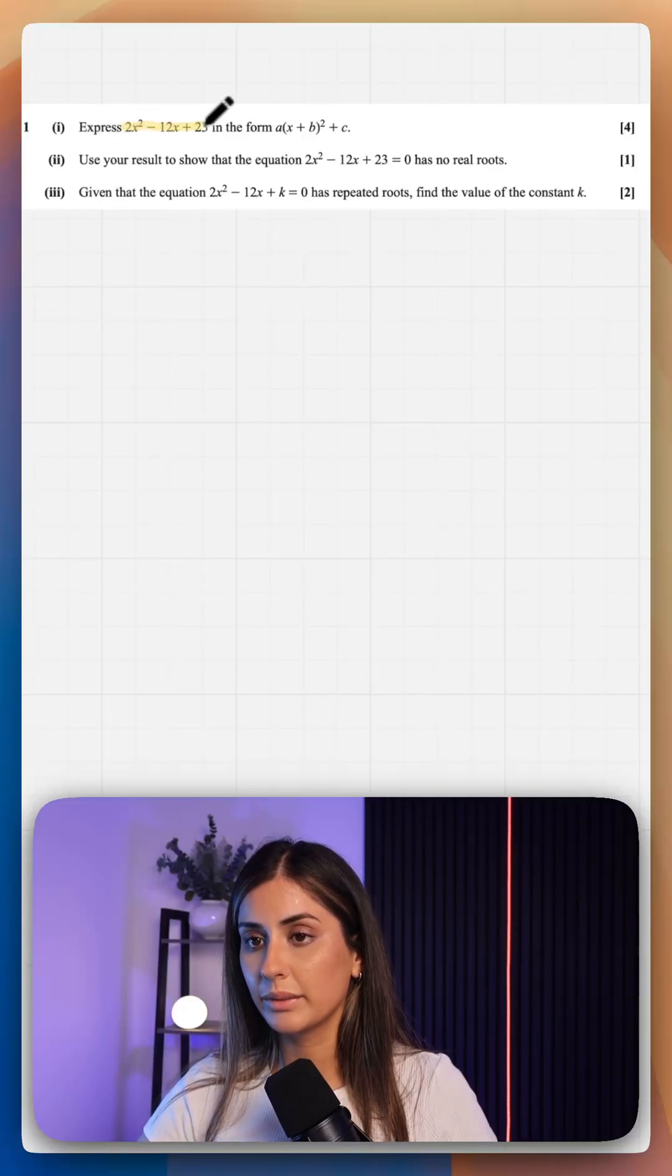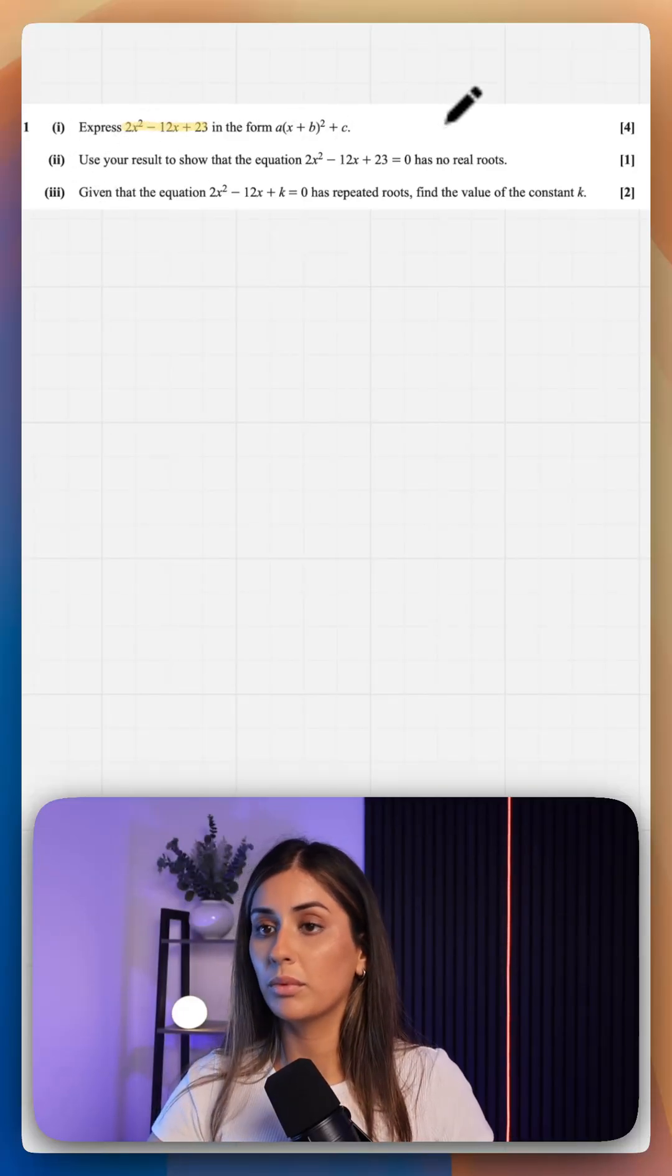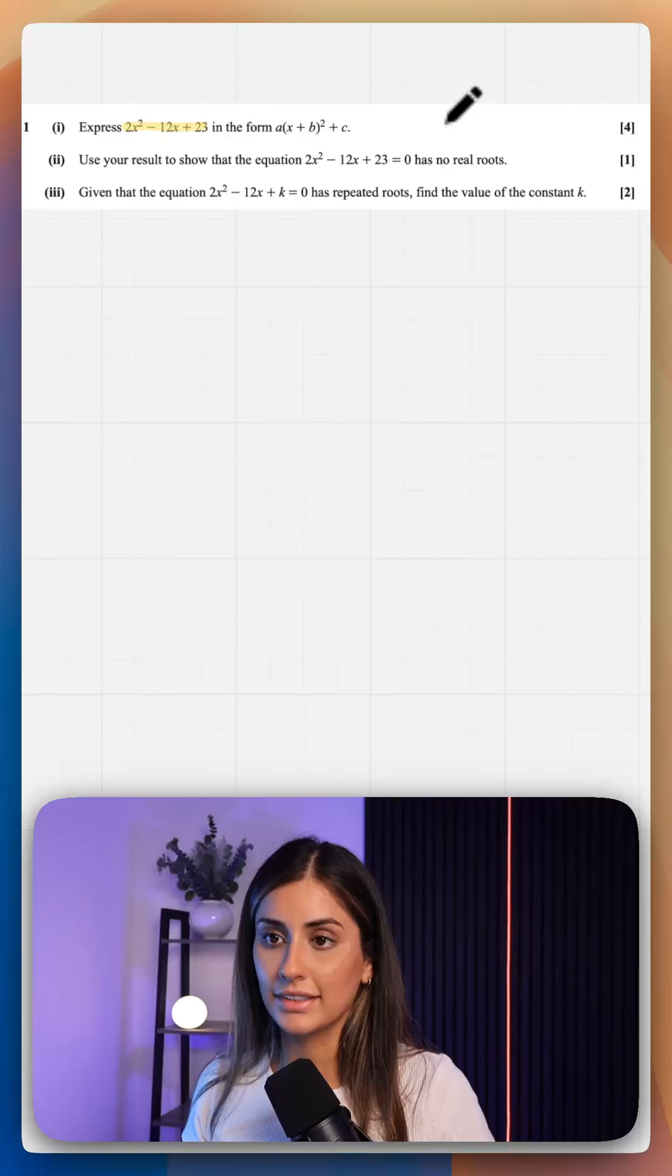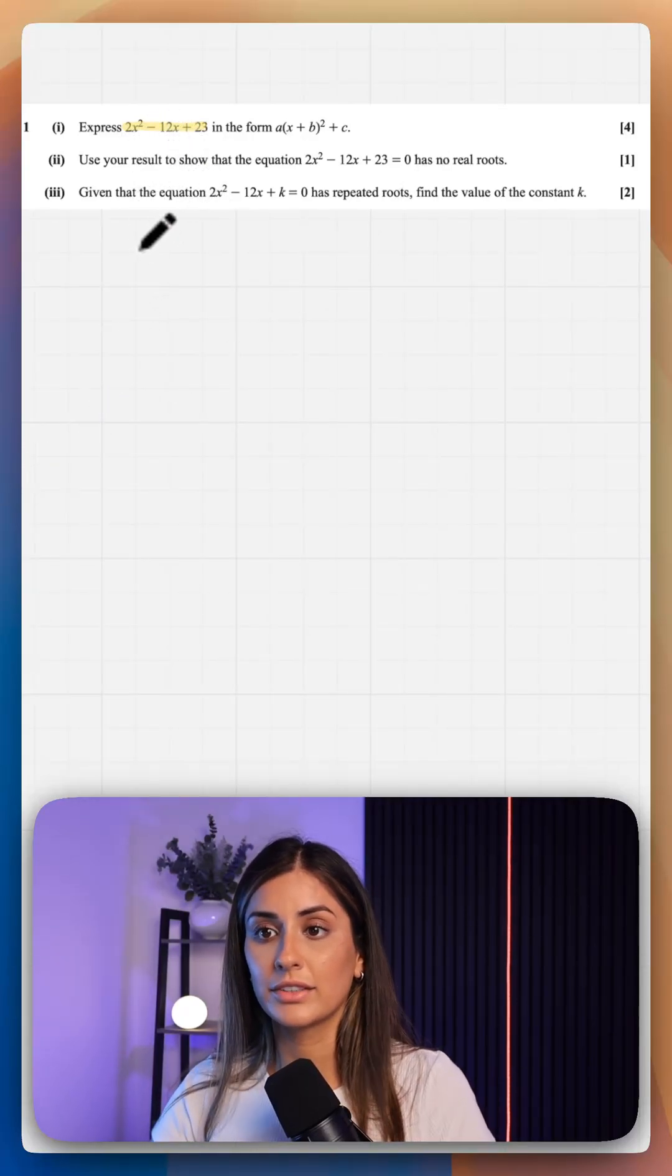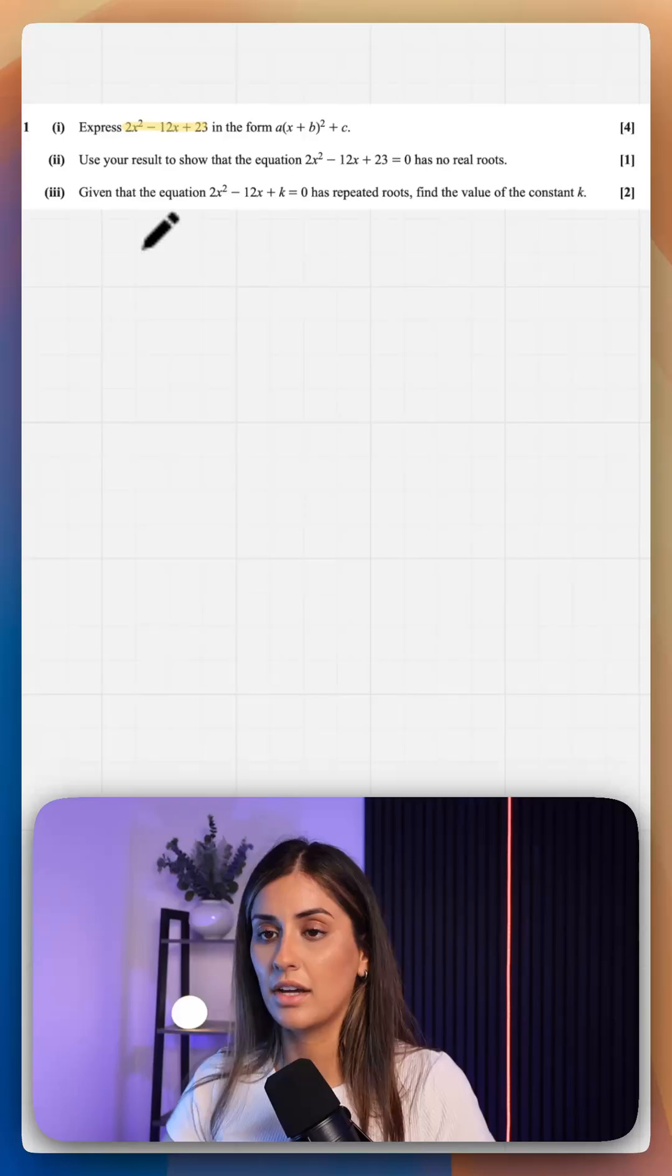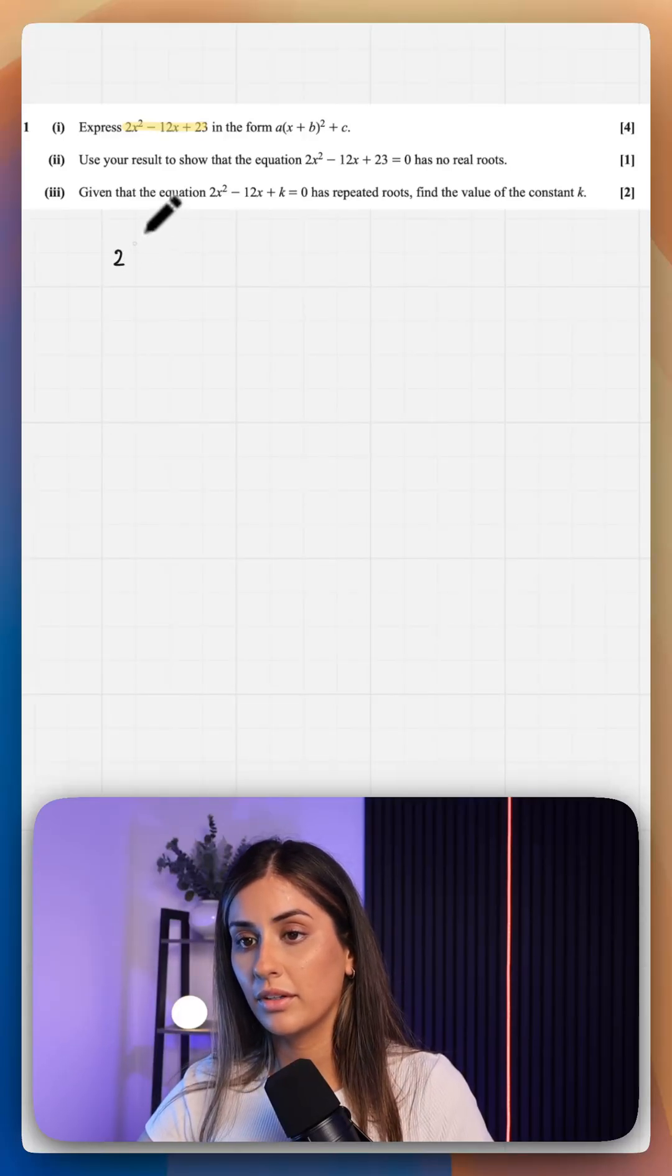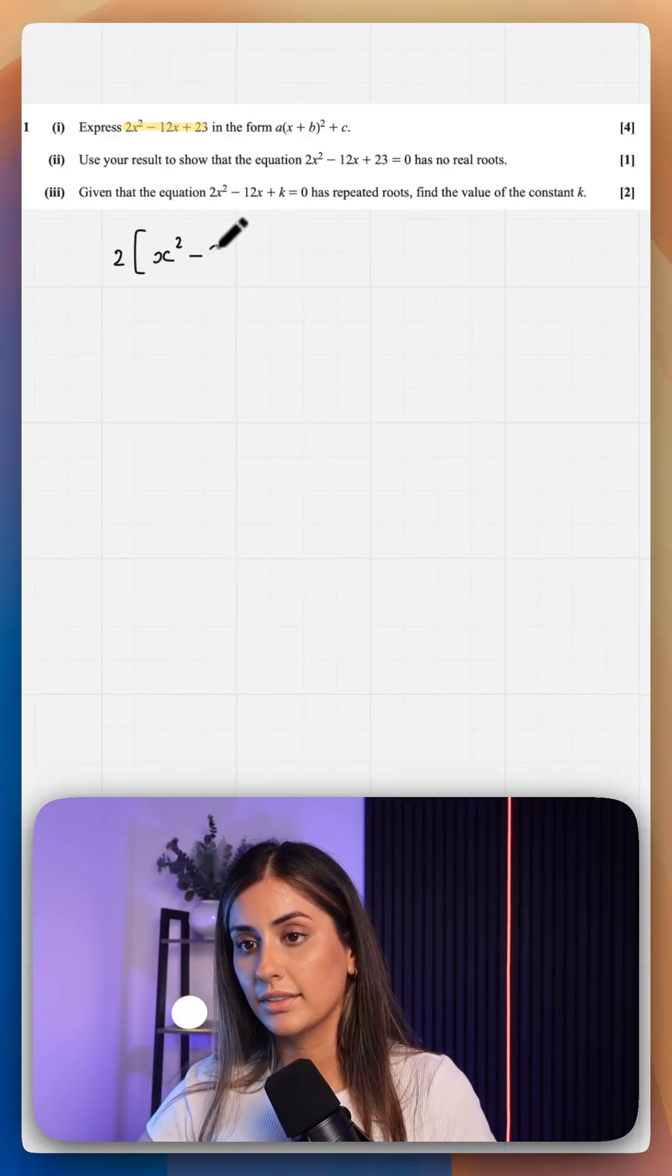If a quadratic needs to be expressed in this form, what you're essentially doing is completing the square. So the first thing you need to do is factorize the coefficient of x squared from the first and second term. You don't need to worry about the third one, so that gives us x squared minus 6x.